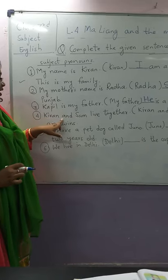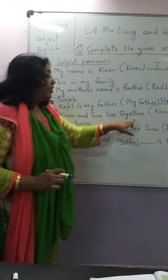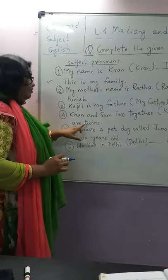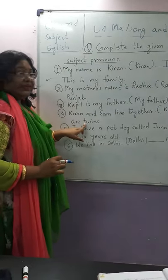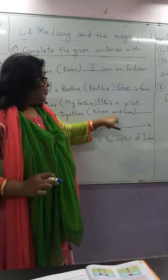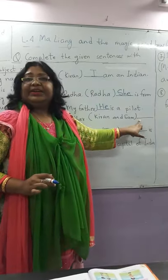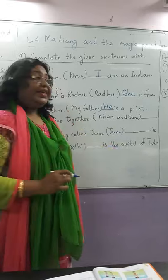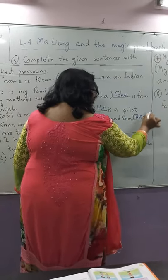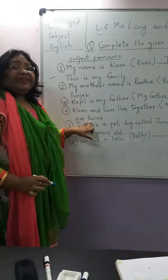Fourth: Kiran and Sam live together. Kiran and Sam dash are twins. So in place of Kiran and Sam, what pronoun will we use? That is 'they.' They are twins.